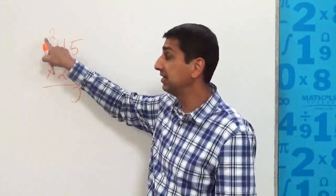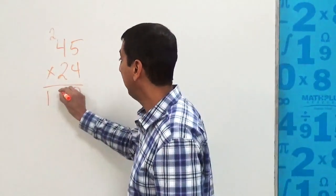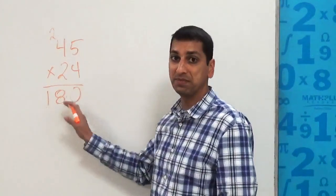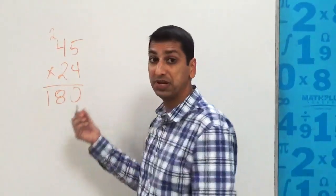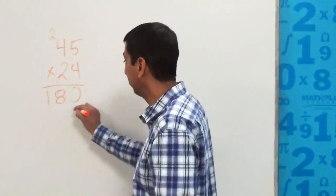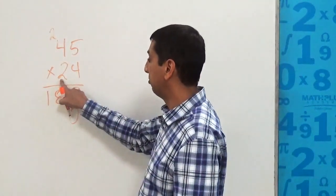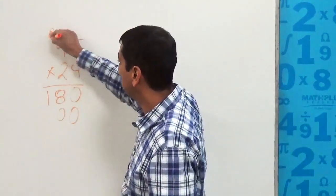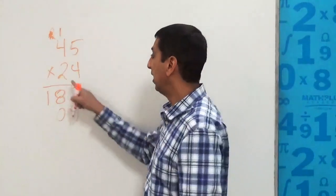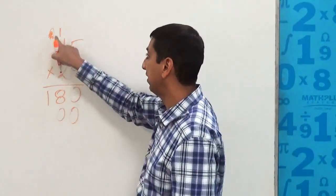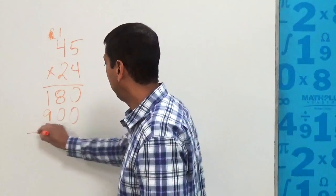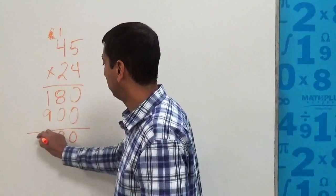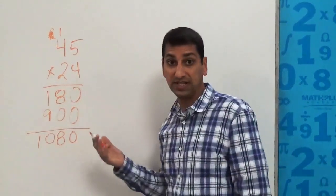Then we do four times four, which is 16. We have to remember to add in the two, which is 18, and we place that there. Again, we haven't really told anyone exactly why we're doing that, but that's how you execute the procedure. Then you put in your placeholder zero. And you move over to this number, and you do two times five is ten. You only write the zero, we carry a one. And then two times four is eight, we have to add in that one, which is nine. And then we add these all together - zero, zero, zero. There's an eight, and here's ten, and it's 1,080.